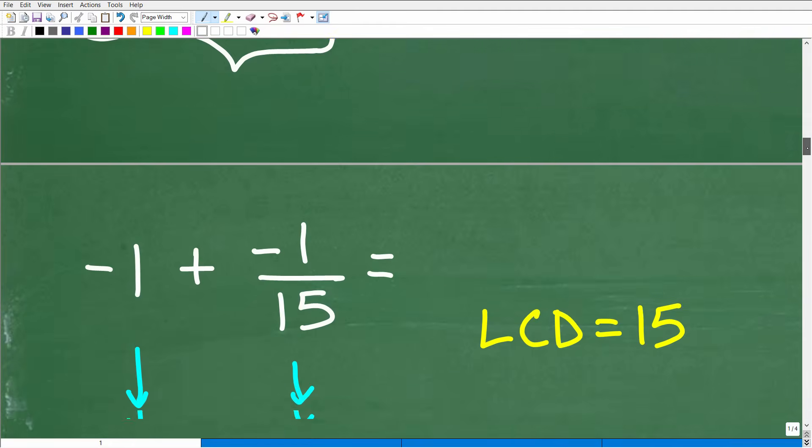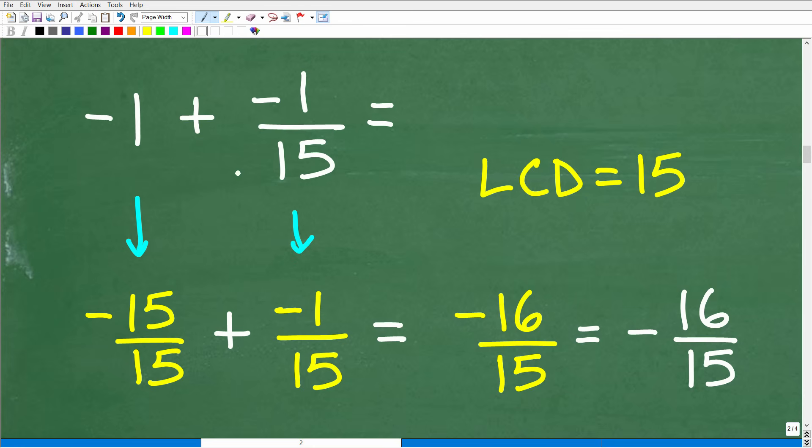But let's suppose you're like, I have negative one plus negative one-fifteenth, I got to add these up. So let's think of negative one as a fraction. Anytime you want to think of a number as a fraction, just put it over one. So negative one, we could think of as the fraction negative one over one. Again, we're back to adding fractions. We have to consider what the lowest common denominator is. Here it's 15. So we're going to have to change this fraction so its denominator is 15. We're going to multiply both the numerator and denominator by 15, and you have negative 15 over 15. So we're adding fractions. Same denominator, so we're going to add the respective numerators. Negative 15 plus negative one is negative 16. So negative 16 over 15.